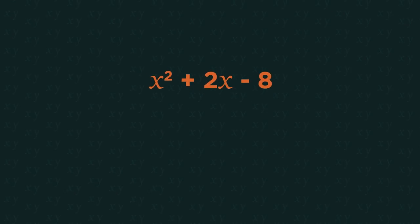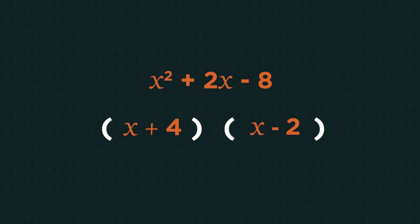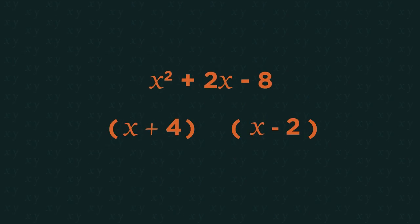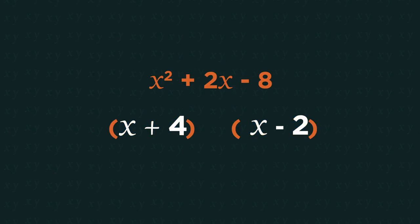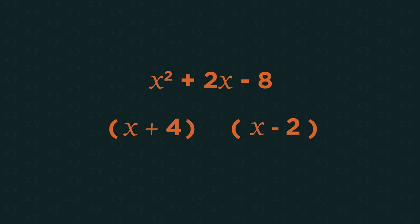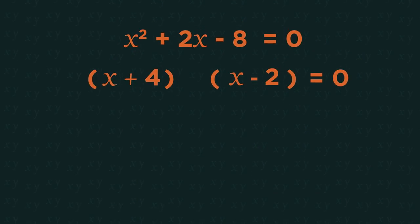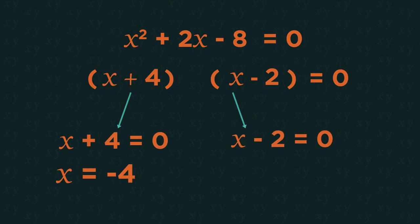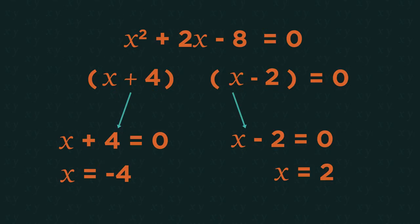When we factorise, we usually end up with two brackets. This is going to give us two roots. To solve this factorised quadratic, we need it all to equal zero. Now we can solve. Make each bracket equal to zero and solve. That's all there is to it. x is negative 4 and x is 2.